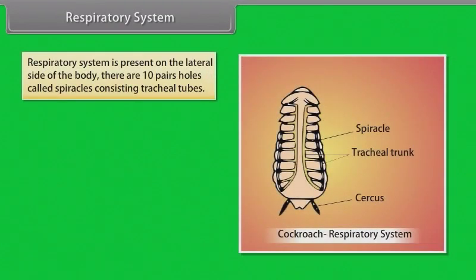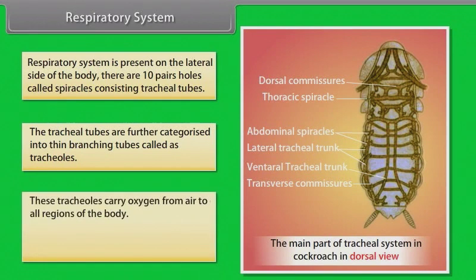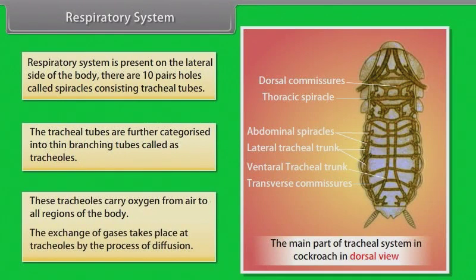Respiratory System. The respiratory system is present on the lateral side of the body. There are ten pairs of holes called spiracles, consisting of tracheal tubes. The tracheal tubes are further categorized into thin branching tubes called tracheoles. These tracheoles carry oxygen from air to all regions of the body. The exchange of gases takes place at the tracheoles by the process of diffusion.